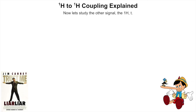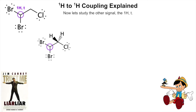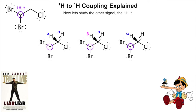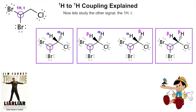Now let's study the other signal: the one-hydrogen triplet. It's a triplet because it has two hydrogen neighbors next door, and by the n+1 rule, two plus one equals three — a triplet. It can have an alpha-alpha combination of those neighbors, or a beta-alpha, or an alpha-beta, or finally a beta-beta. Wait — it's supposed to be a triplet but there are four combinations here.